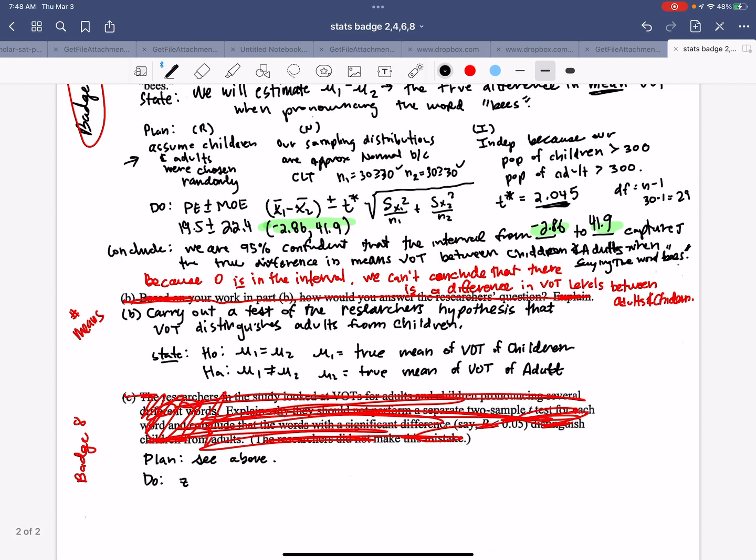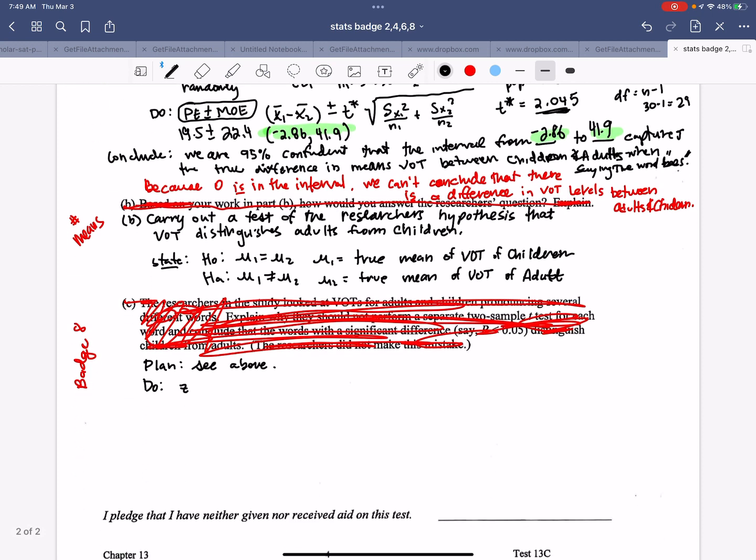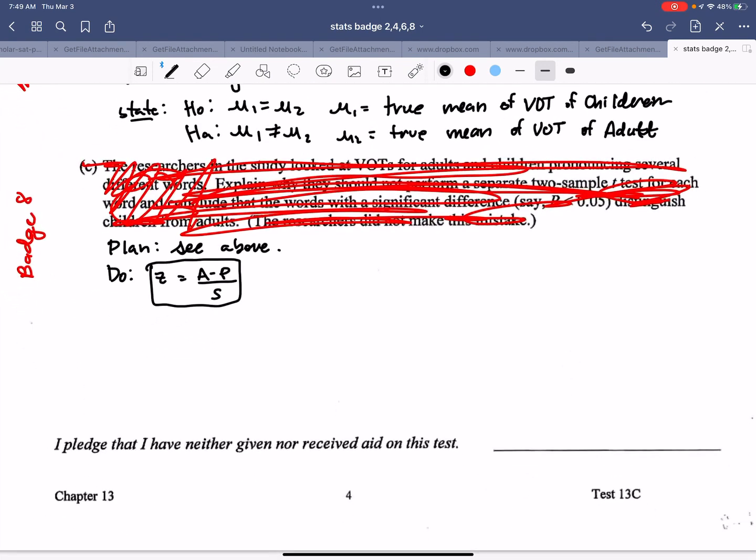Let's think about what the do would be. So instead of doing a confidence interval, and our general formula is this, we're doing a test, so we need a z-score so that we can get a P, and then we're going to look to see what that P is. So that's what badge 8 is.